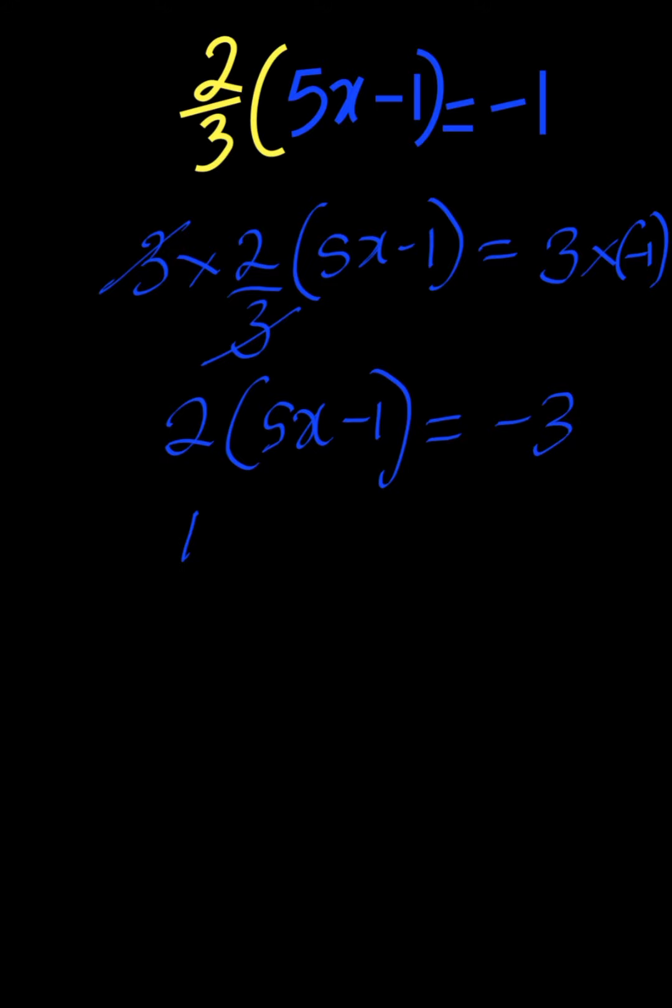2 times 5x is 10x and 2 times negative 1 is negative 2, everything equal to negative 3. You then move the negative 2 to the right hand side, it turns to positive. So from here, 10x is equal to minus 1.